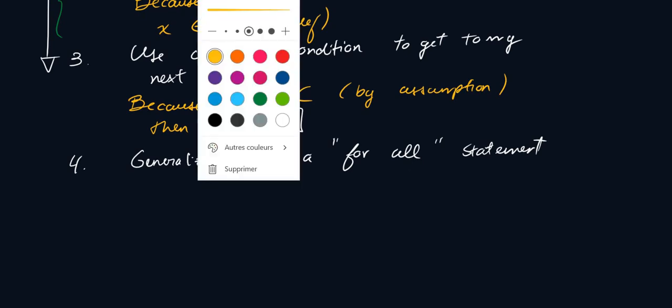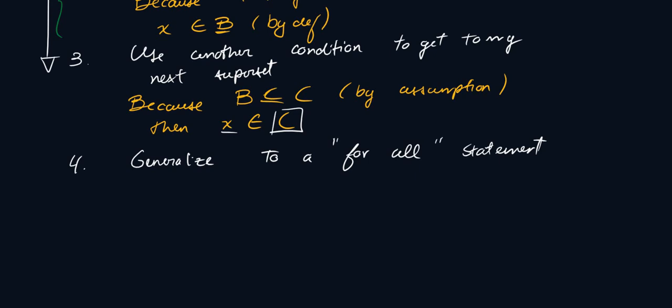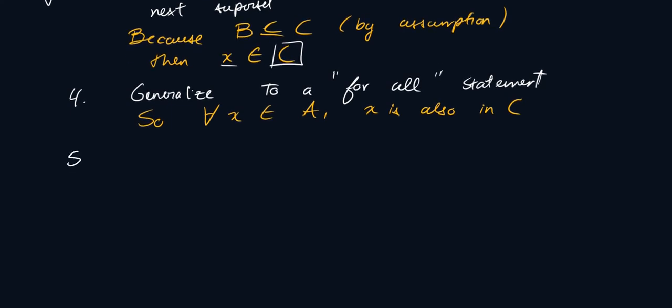So your next line of proof will be: for all or for any X in A, X is also in C. And so the last thing you have to notice, your fifth step, is notice the definition of A subset of C. So the definition of a subset is that for any element in A, that same element must be in C.